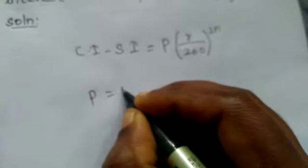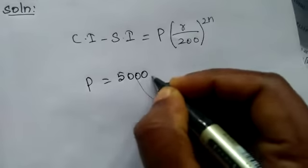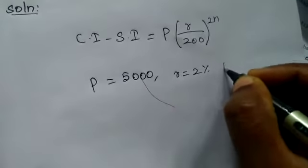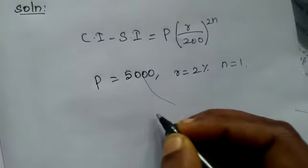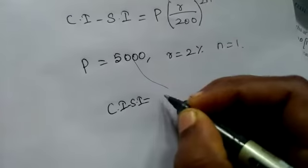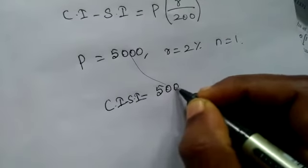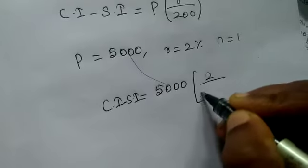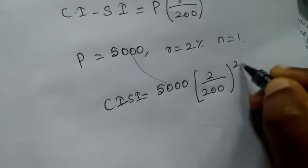Now here P is 5000, R is 2%, N equal to 1. Now substitute the formula: CI minus SI equal to 5000 into R by 2 by 200 the whole power 2N.